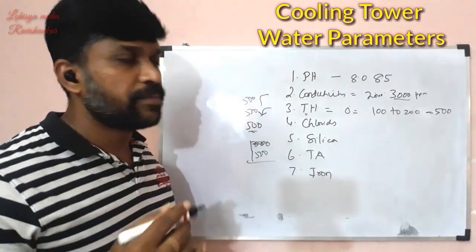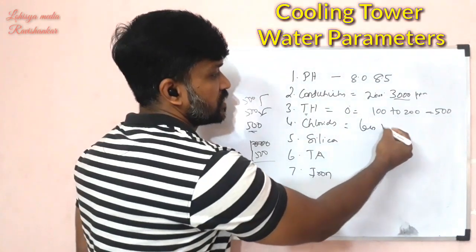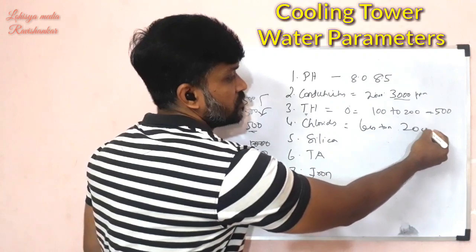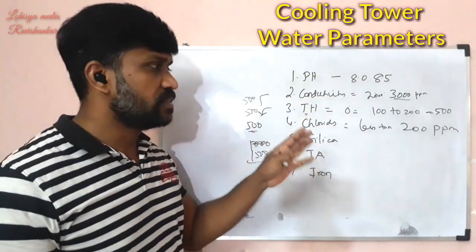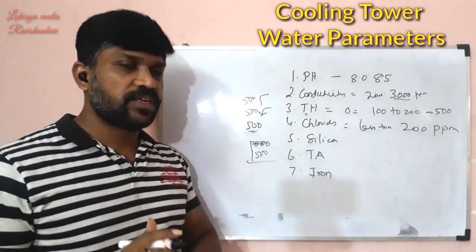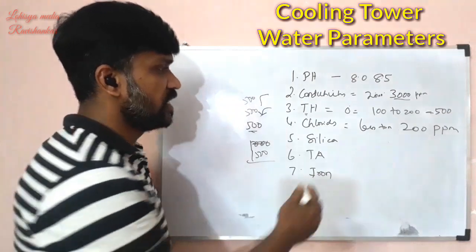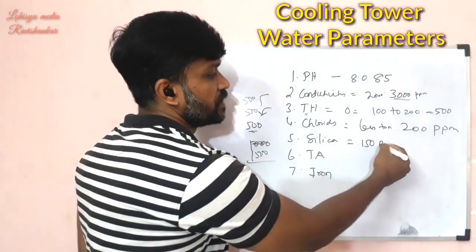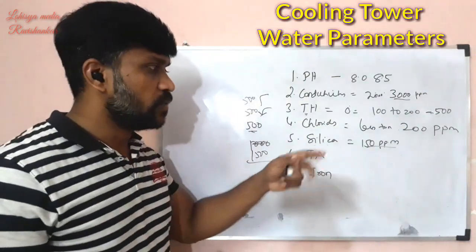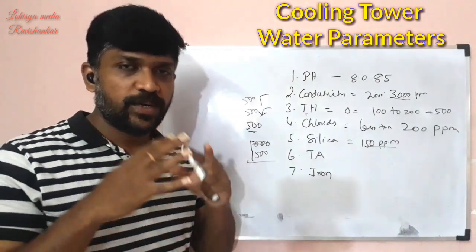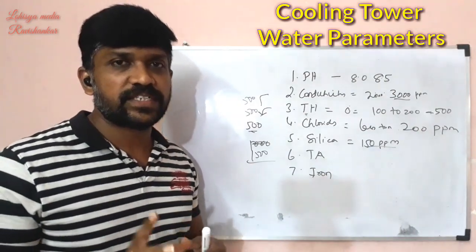For chlorides, the value should be less than 200 PPM. If chlorides exceed this, it can damage the cooling system. For silica, it should be maintained at less than 150 PPM. If silica is too high, it can cause silica scaling, which is a very difficult type of scale to remove.